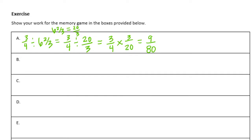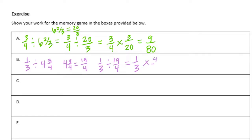Next one: one-third divided by four and three-fourths. Let's make four and three-fourths into an improper fraction: four times four is sixteen, plus three is nineteen-fourths. One-third divided by nineteen-fourths — we're going to invert and multiply, so times four-nineteenths. One times four is four, three times nineteen is fifty-seven, so four fifty-sevenths.